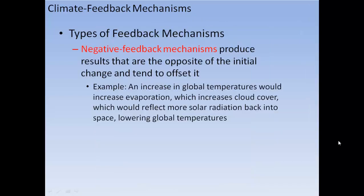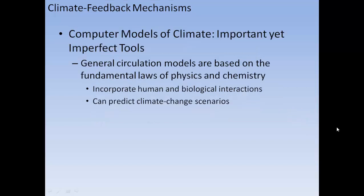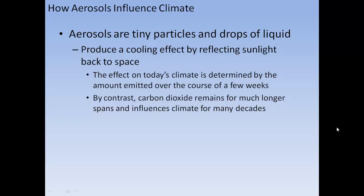Many feedback mechanisms produce results opposite to the initial change and tend to offset it — for example, increasing global temperatures increase evaporation, which increases cloud cover, which reflects more solar radiation back into space, lowering global temperatures. Computer models of climate are important yet imperfect tools. General circulation models are based on fundamental laws of physics and chemistry and incorporate human and biological interactions to predict climate change scenarios. Aerosols produce a cooling effect by reflecting sunlight, but their effect lasts only weeks, whereas carbon dioxide remains for decades.